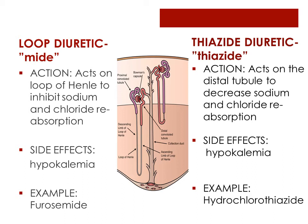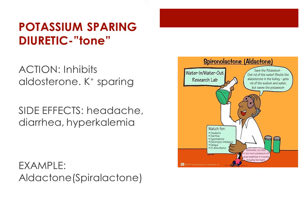As healthcare professionals, we need to always monitor blood pressure and potassium levels. If potassium levels are too low or too high, they can weaken the heart and cause life-threatening arrhythmias. Here's a potassium-sparing diuretic — it is actually an aldosterone inhibitor. The example is aldactone or spironolactone. These medications interrupt the sodium-potassium exchange in the distal tubule, but they don't deplete potassium. Aldactone leaves potassium alone, but we need to watch for hyperkalemia. Other side effects may include headache and diarrhea.